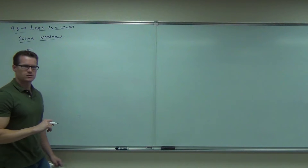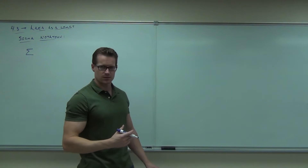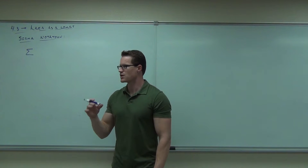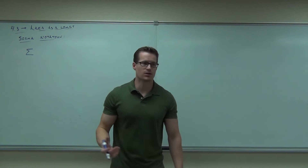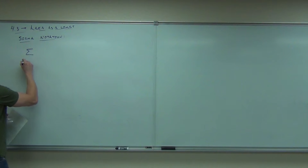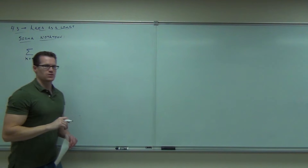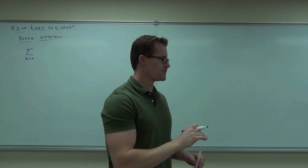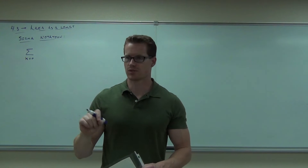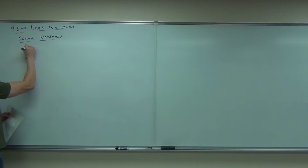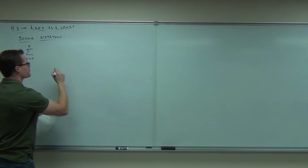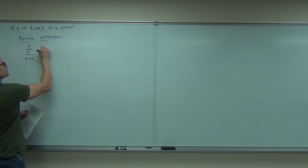It looks like that. What does that mean? It's a Greek letter S, so it means sum — it says, add whatever I tell you to add. Here's a quick example. The k equals 0 says the variable — the index — I'm going to use is k. I'm going to start where k equals 0, stop where k equals 5, and apply that to each of the following: k cubed.